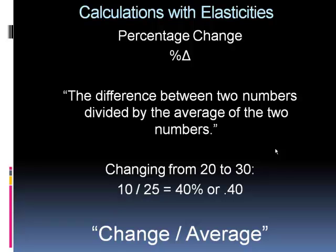In economics we use what's called the midpoint formula. We want a consistent answer whether you're increasing from 20 to 30 or decreasing from 30 to 20. And to do that we take the difference between the two numbers, 20 to 30, that's 10 is the difference, and divide that by the average of the two numbers. Add them together, divide by two, you get the average.